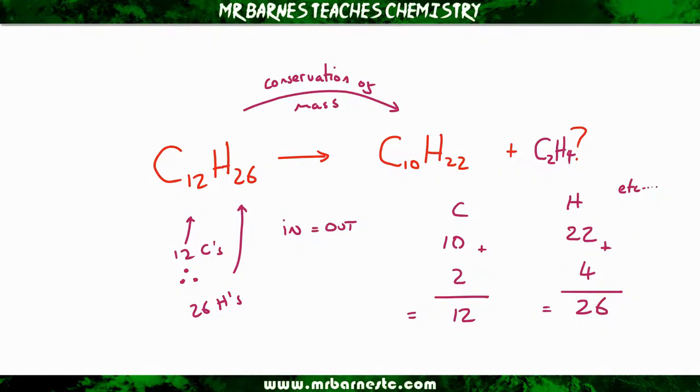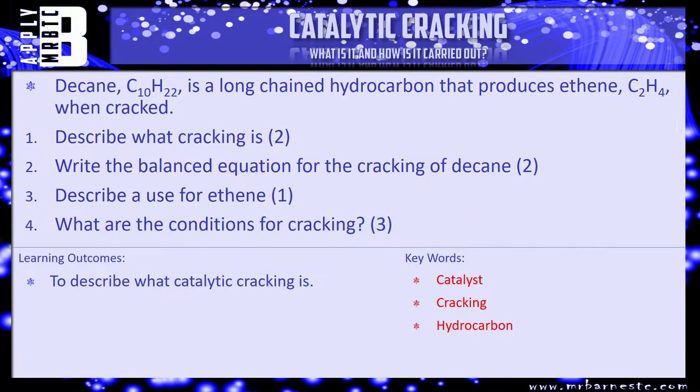And that really is all you need to do if you get something like that. I have a few questions for you. This question says: Decane C10H22 is a long-chained hydrocarbon that produces ethene C2H4 when cracked. Number one, describe what cracking is, for two marks. Number two, write the balanced equation for the cracking of decane. Number three, describe a use for ethene. And number four, what are the conditions for cracking? Pause the video, have a go at the questions, and we'll see how you've done in a minute.